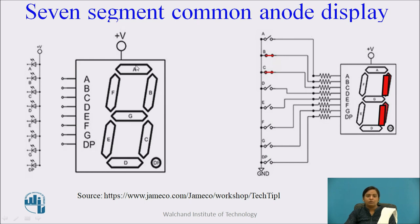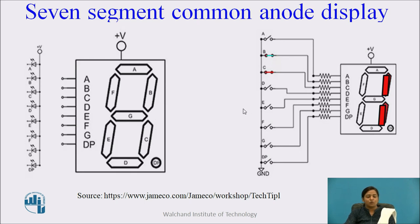In common anode, all anode terminals of the 7 LEDs are connected together and connected to the positive terminal. The segment which is to be displayed has its respective LED connected to the ground connection, so it becomes forward biased. For example, to display 1, the LEDs at B and C are connected to ground and all other LEDs remain off. The LEDs at B and C become forward biased and emit light, so the number 1 is displayed. In this way, the 7-segment display is used to display numbers from 0 to 9.